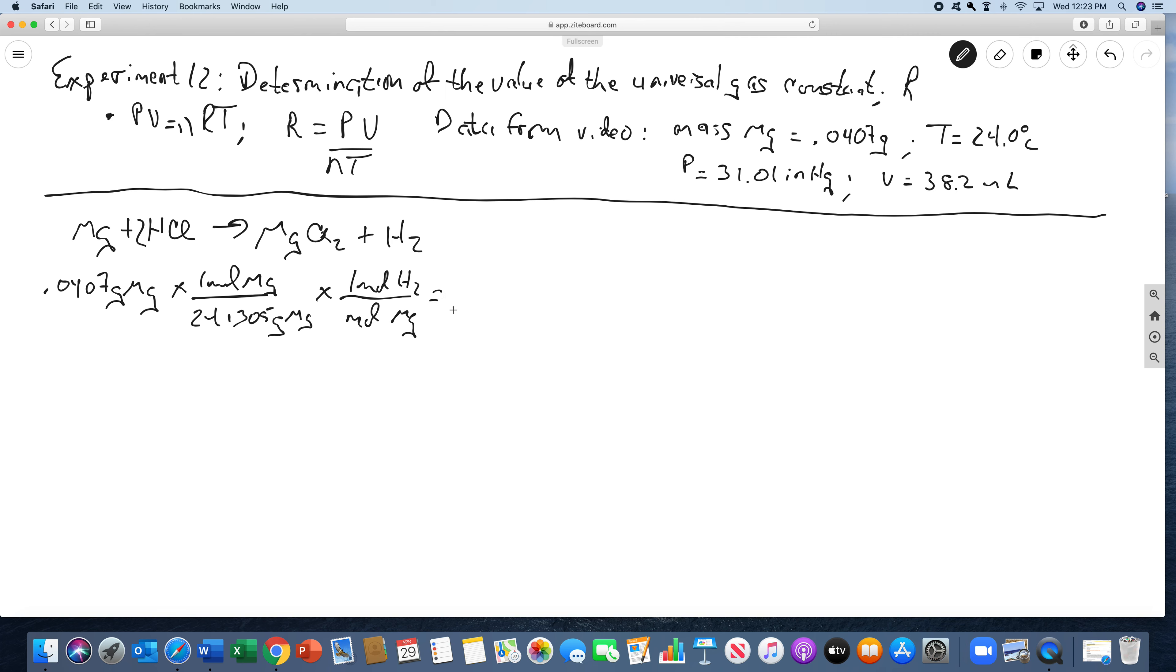From the balanced chemical equation we know that there's one mole of hydrogen per mole of magnesium. So that means we have 0.00167 moles of hydrogen. And that's N. I'm going to summarize this over here. N is 0.00167 moles.